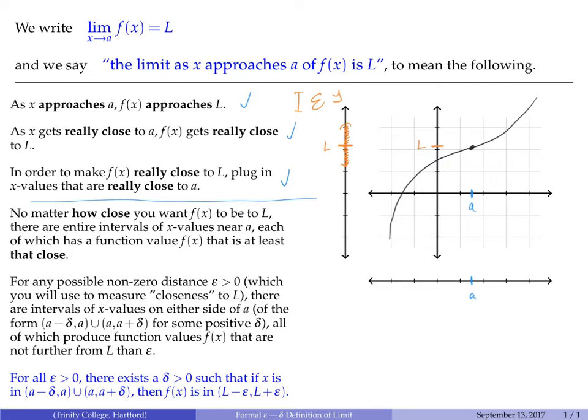More precisely, they're all within a distance of epsilon from L. If you want to be closer, just make epsilon smaller, and this interval will shrink to include values that are even closer to L. For now, we'll say this would be the point L plus epsilon, and this would be the point L minus epsilon.